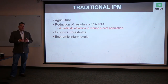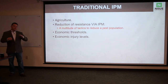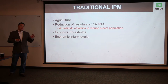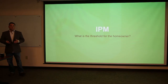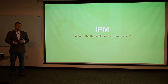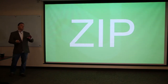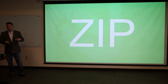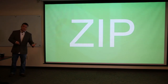Traditional IPM is mostly agriculture-based, where you'd have a threshold — an injury level you measure to decide when to switch from one product to the next. However, for our industry, what is the threshold for a homeowner? I'd say it's zero. Even if you killed all the roaches and the homeowner finds one American cockroach dead on its backside, they'll probably call and say they still have roaches.